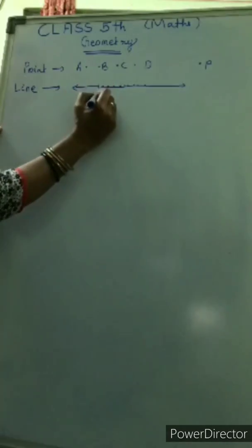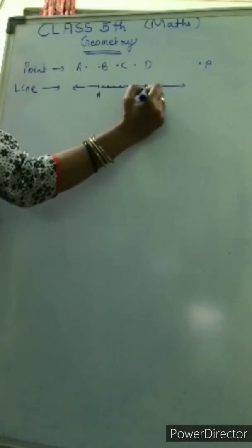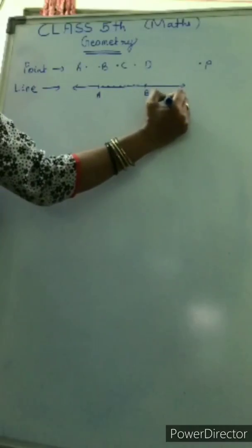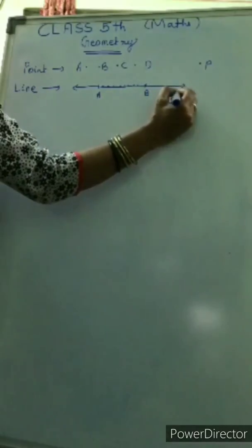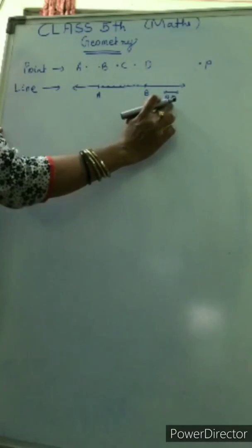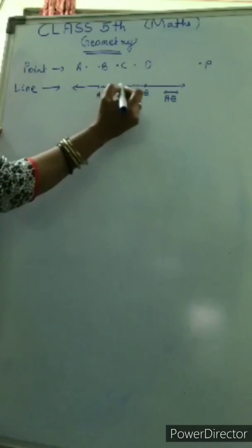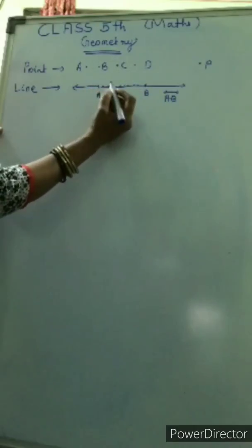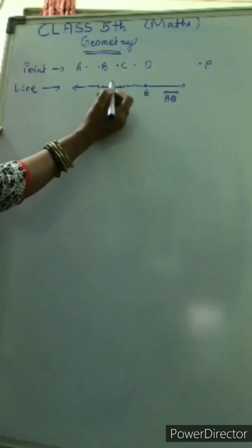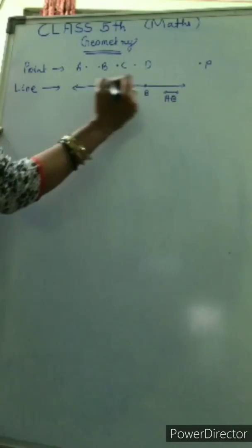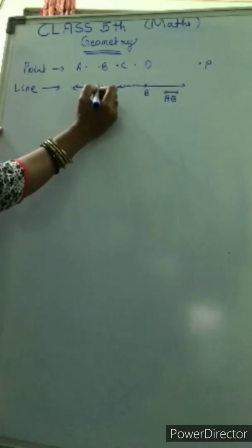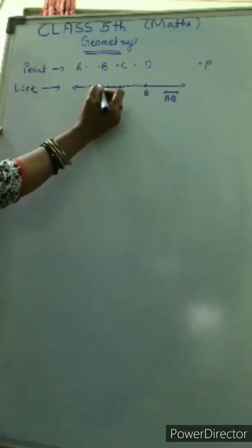Now suppose I take two points on it, that is A and B. So it can be written as AB with arrows on both sides — this is the geometrical notation of a line. There are three properties of a line: it has indefinite length because it can extend in both directions, and it has no end point.